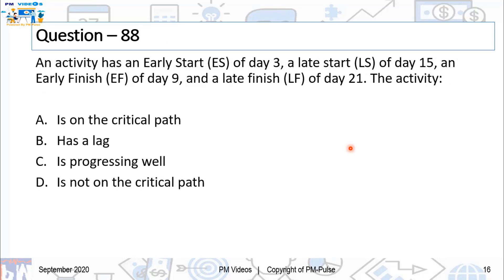Question number 88. An activity has an early start ES of day 3, a late start LS of day 15, an early finish EF of day 9, and a late finish LF of day 21. The activity: A, is on the critical path. B, has a lag. C, is progressing well. D, is not on critical path.